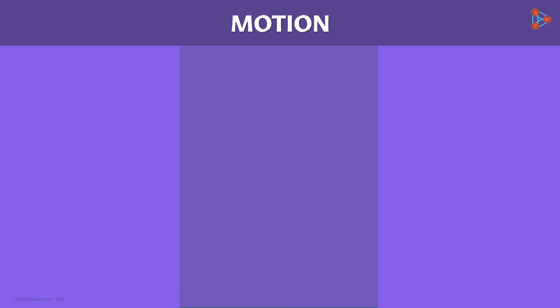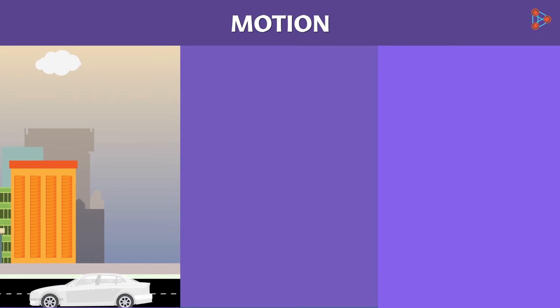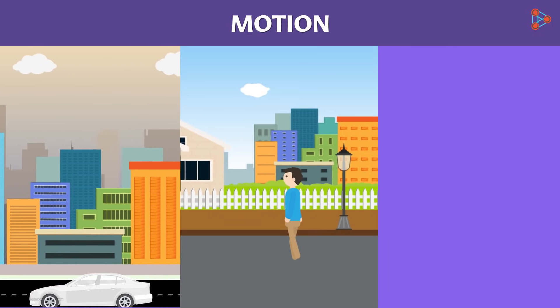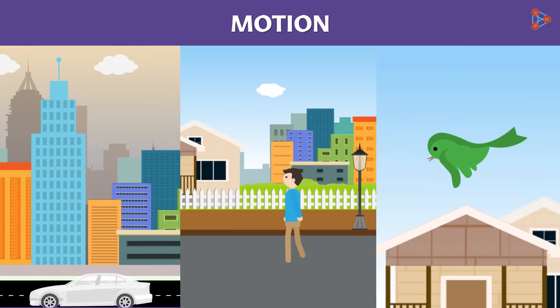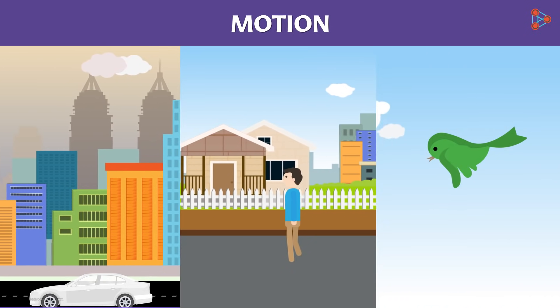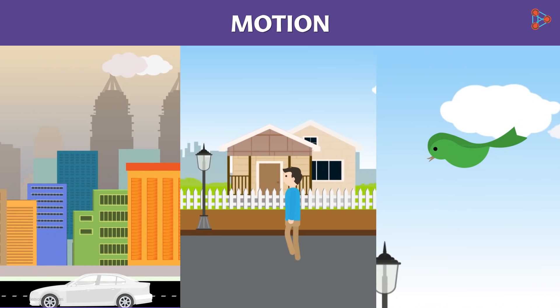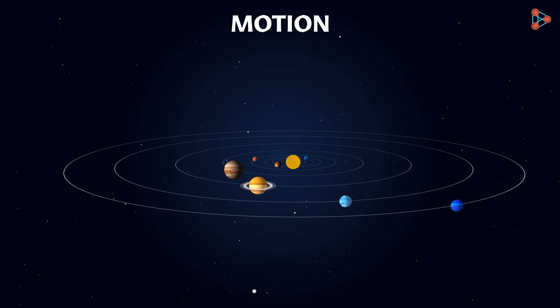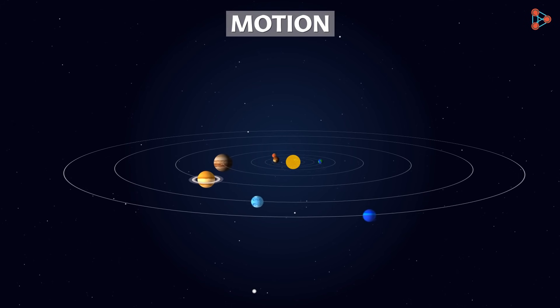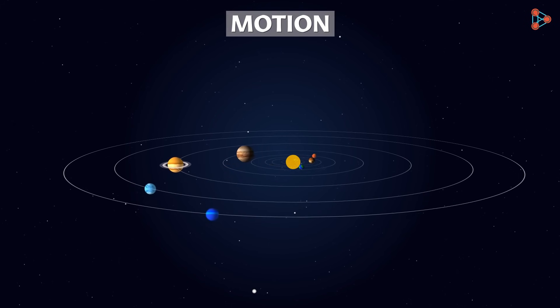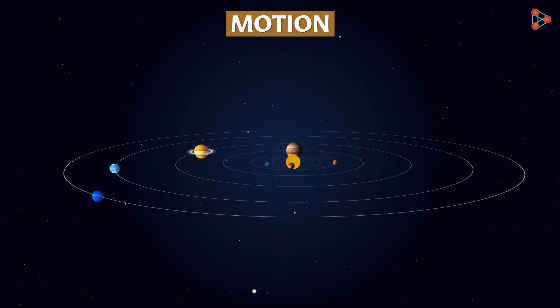In our day-to-day life, we see various things moving around us. Simple examples are vehicles moving on the road, people walking across streets, birds flying in the sky, and so on. Do you know that the earth and the other planets also undergo motion? Yes, they are revolving around the sun. You can give me thousands of such examples of motion.